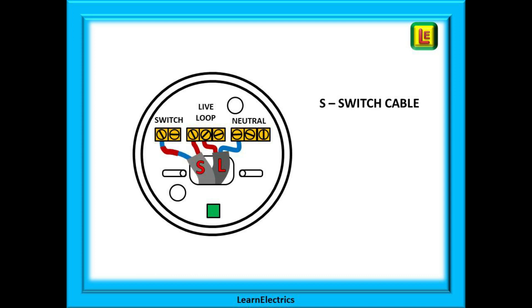Now connect the switch wires. The twin and earth cable is marked S for switch here. The brown in this case is connected to a hole in the loop block and the blue with brown sleeving is connected into a hole in the switch block.